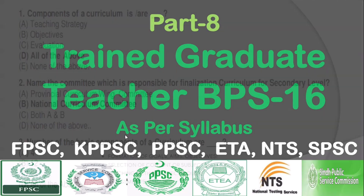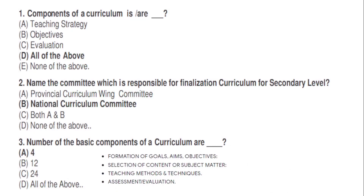As per syllabus, components of a curriculum are: correct option A(d) — all of the above — meaning (a) teaching strategy, (b) objectives, and (c) evaluation. All three are correct, so the right option is A(d): all of the above.